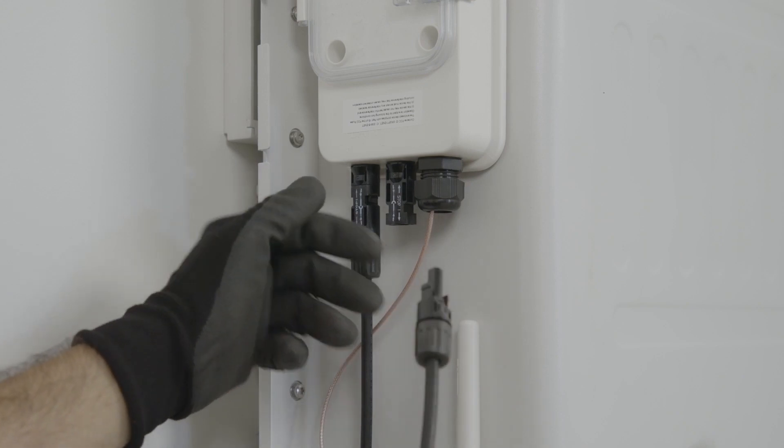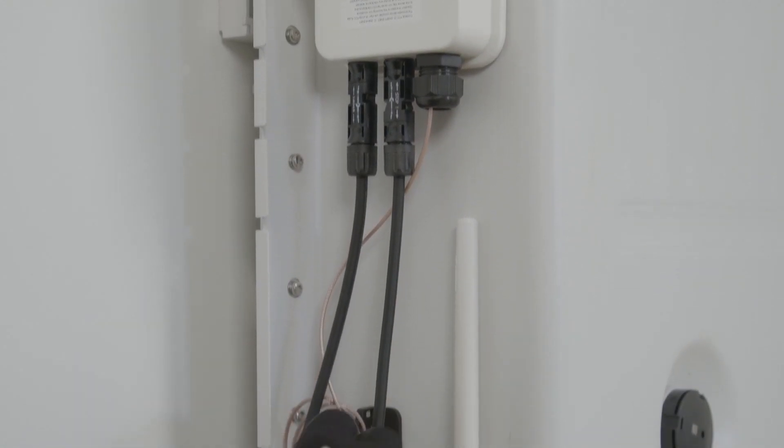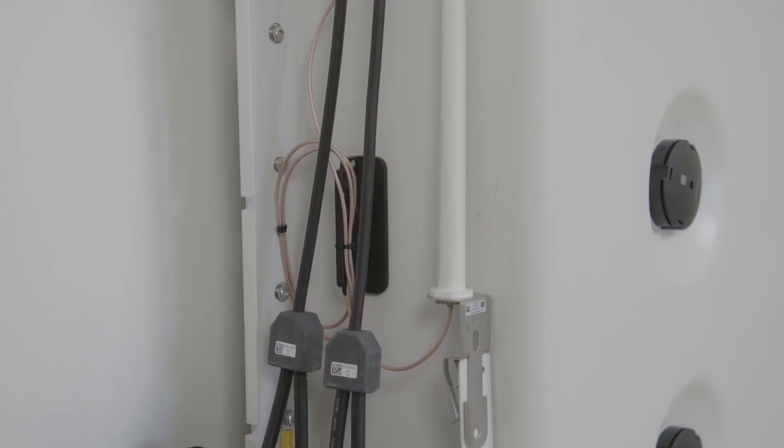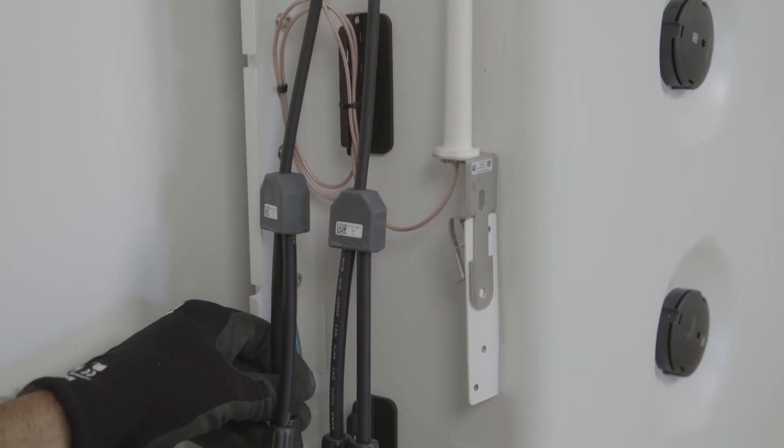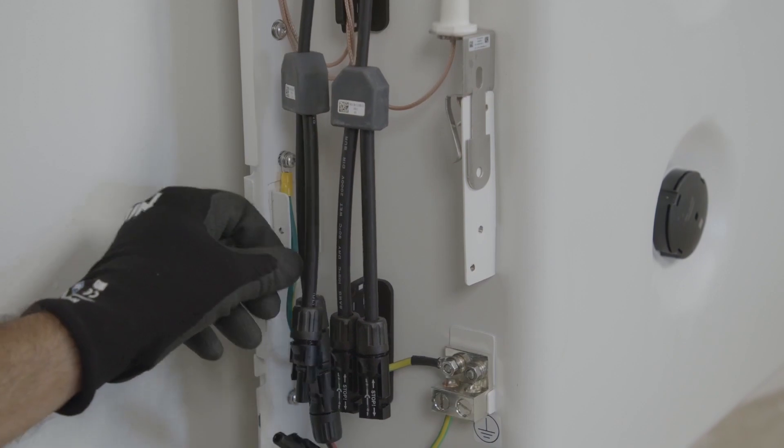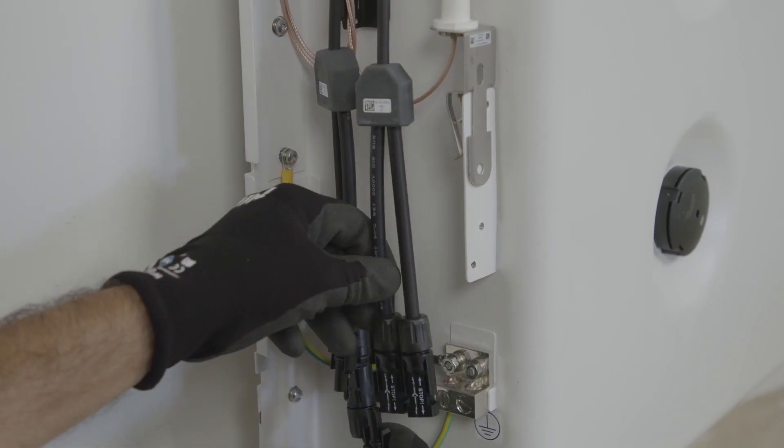If two SolarEdge home batteries are going to be connected in parallel, you'll need to use the SolarEdge Y branch connector. Simply plug those in at each of the associated DC connections, one from the additional battery and the second going back to the inverter.